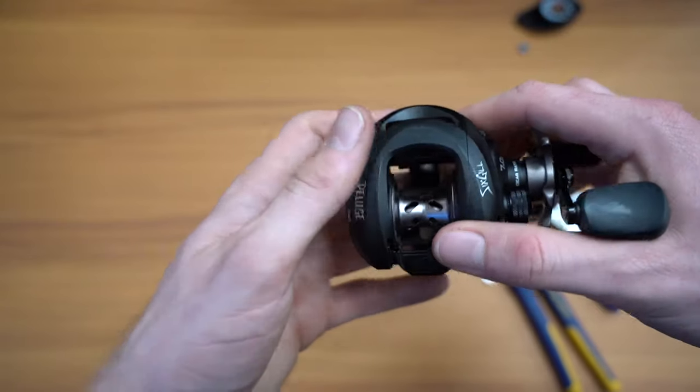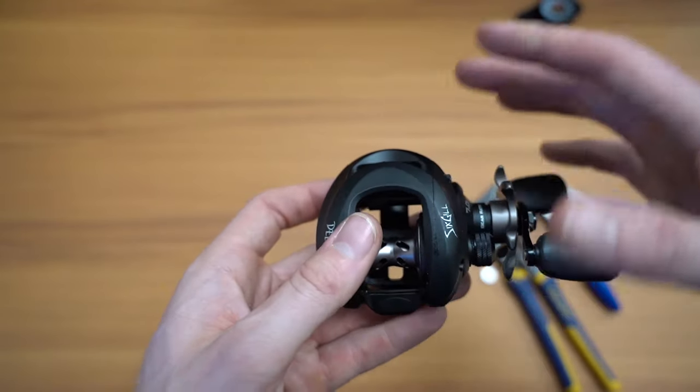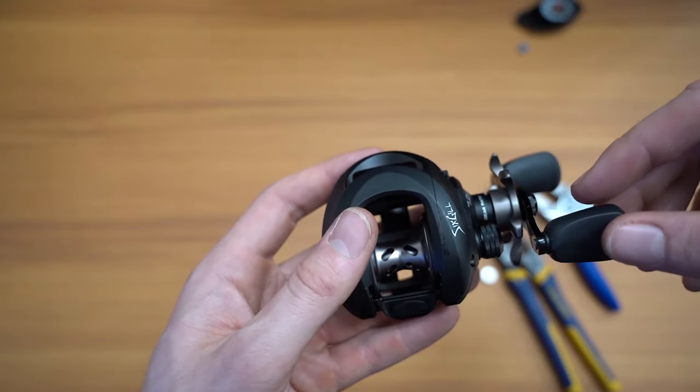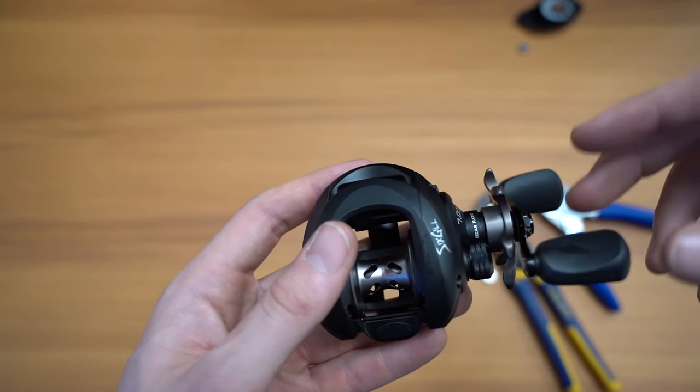Something else to keep in mind is the ceramic bearings are going to be a little louder than the shielded stainless steel bearings. This will quiet over time. The more you fish with it, the more you cast with it, the more they're going to open up and the quieter they're going to get.